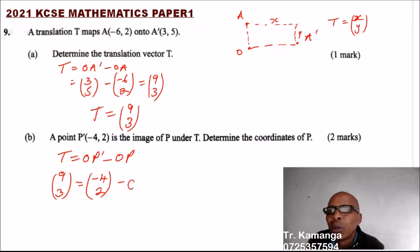If we get OP, we'll be able to get the coordinates of P, because OP is the column vector, the position vector from the origin.